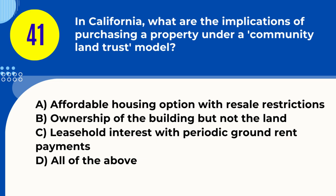Question 41. In California, what are the implications of purchasing a property under a community land trust model? A. Affordable housing option with resale restrictions B. Ownership of the building but not the land C. Leasehold interest with periodic ground rent payments D. All of the above. Answer: D. All of the above. Explanation: Purchasing under a community land trust model often involves affordable housing options, owning the building but not the land, and leasehold interest with ground rent.